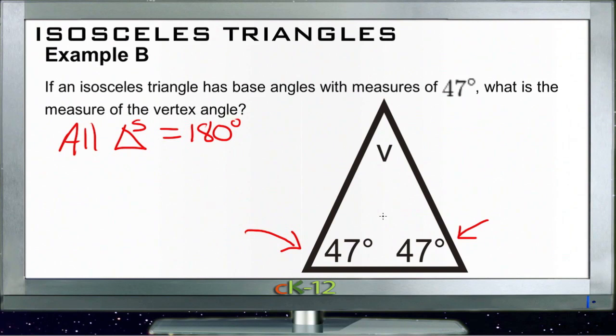So if the two base angles are 47, then this triangle is 47 degrees plus 47 degrees plus some other number of degrees, in this case V, and that has to equal 180.